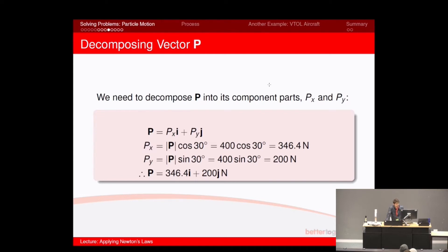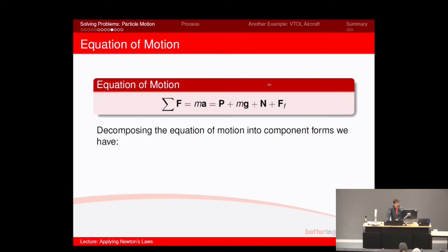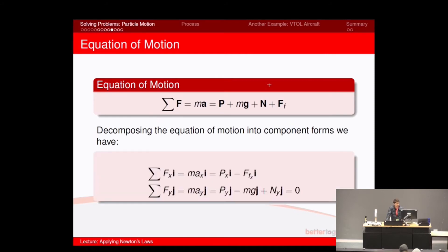We break the p-force up into its x and y components, getting 346.4 newtons for px and 200 newtons for py. So you can rewrite the p-vector of 400 newtons as 346.4 times the i unit vector plus 200j. Both have positive signs, meaning they are in the positive direction of both coordinate systems. Now we decompose F equals ma into its x and y components. The x-forces are the x-component of p and the frictional force — positive direction and negative direction respectively, giving px·i minus fx·i.